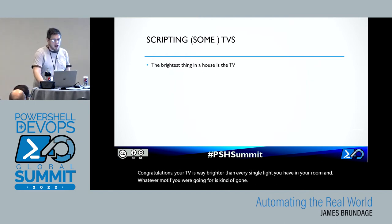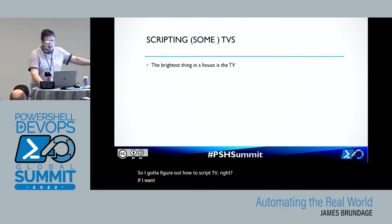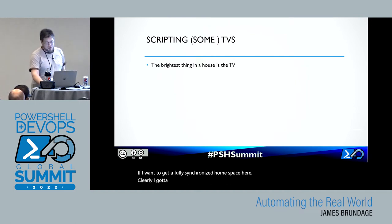While I could talk through lighting for most of this time, I don't think that's going to be the most fun. So we're going to move on to another thing: scripting televisions. You've got all your lights set up, everything is one color, and your TV is still on. Congratulations — your TV is way brighter than every single light you have in your room, and whatever motif you were going for is kind of gone. So I had to figure out how to script the TV.